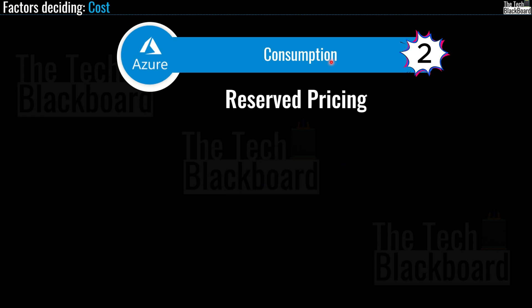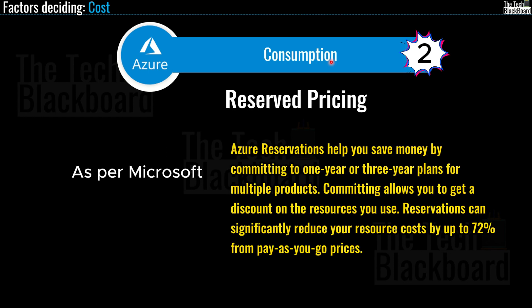Azure also offers reserved pricing. Services such as virtual machines, databases, compute, and storage allow you to commit to a certain level of usage and receive heavy discounts, sometimes reaching up to 72%. You are making a commitment to utilize and pay for a specific period — for example, reserving a virtual machine for one or three years. In return for this long-term commitment, Azure offers steep discounts. Expect some questions around pricing, costing, and reserved instances in the AZ-900 exam.